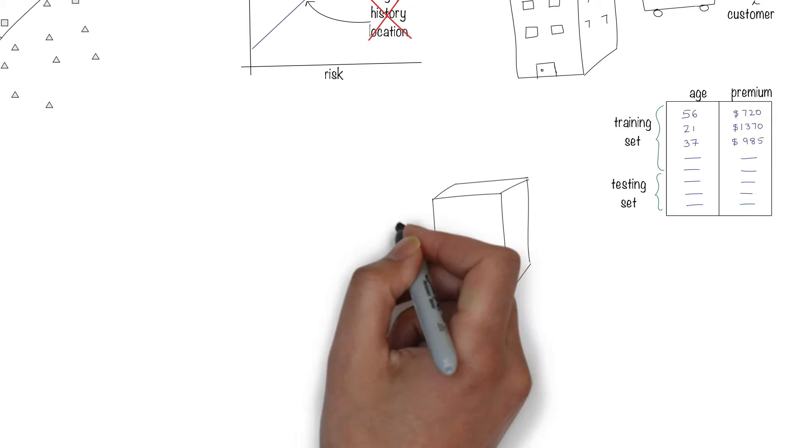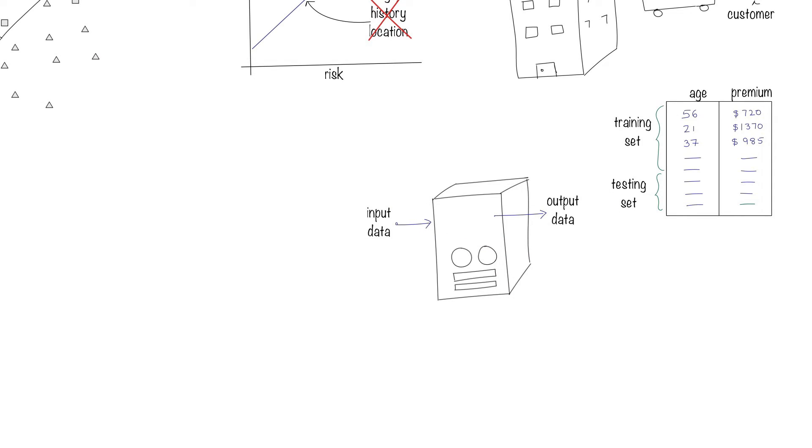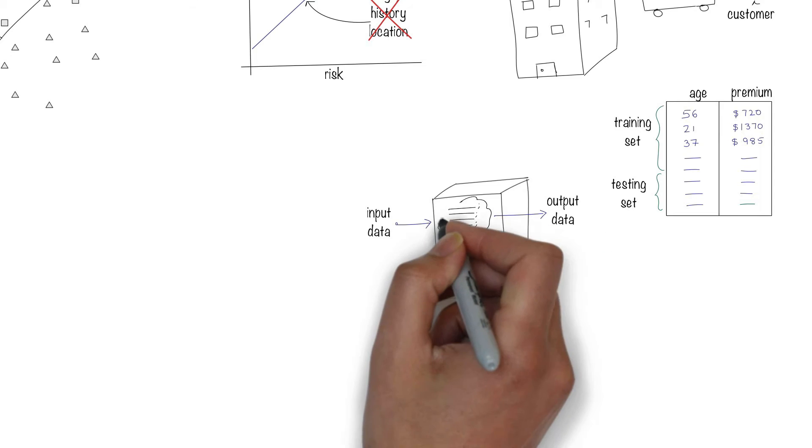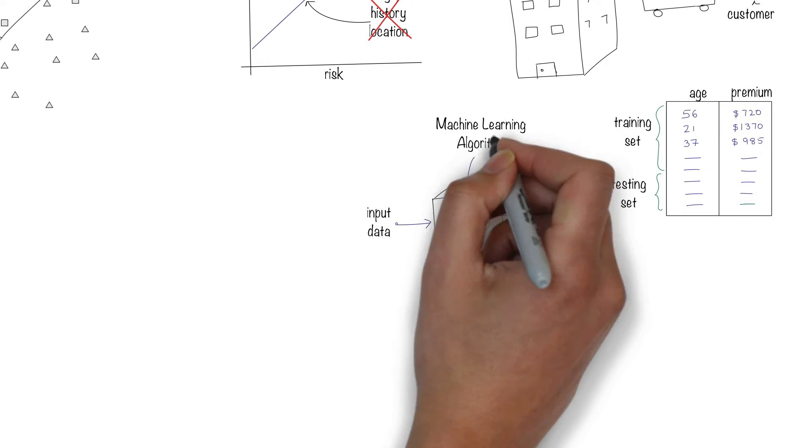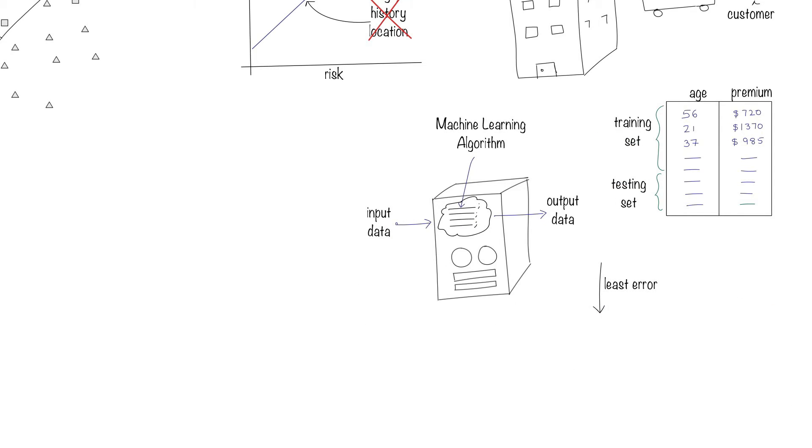Then you use a training set to train the machine. There are a number of machine learning algorithms that you could use, but you can pick the one that seeks to reduce the error on the testing set.